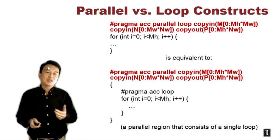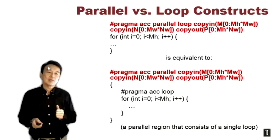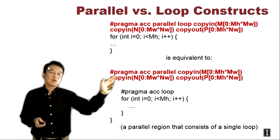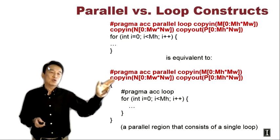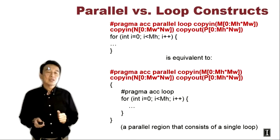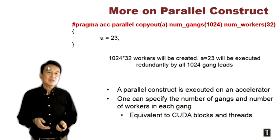Here we show on top the example from the previous lecture. A for loop can be marked by the pragma as an ACC parallel loop with copy-in and copy-out arrangements. This is actually equivalent to adding brackets around the loop and making the region a parallel region, and then within the region declaring that loop as an OpenACC loop. So these two are equivalent — the parallel loop is really just a parallel region with only one single loop inside.